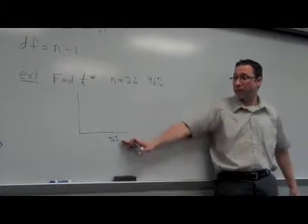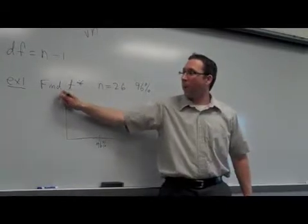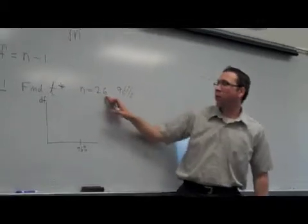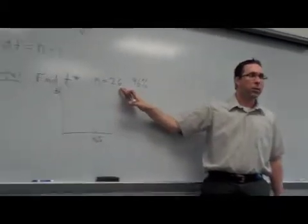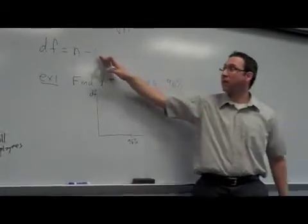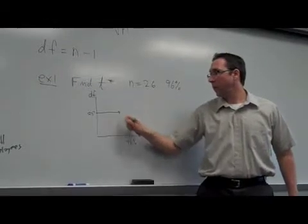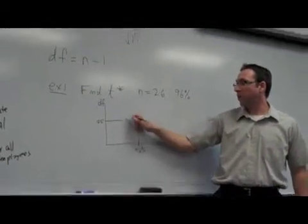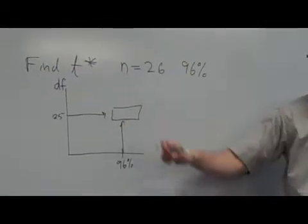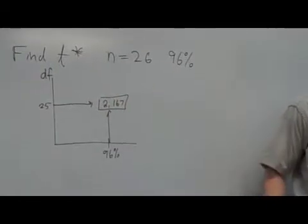All right, so you look at 96 percent, and on the y-axis it's labeled with degree of freedom. We're talking about 26 people in the sample, so what's the degree of freedom that you'd use? 25, it's always one less. So you look at the degree of freedom of 25 and match it up with 96 percent confidence, and it gives you the t score, which ends up being 2.167.